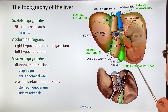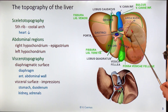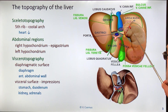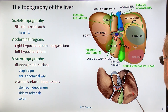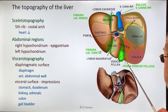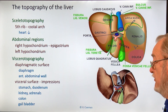Another large organ making an impression behind the liver is the kidney, producing a large renal impression. Sometimes the impression for the suprarenal gland — the impressio suprarenalis — is also visible. The liver is also in contact with the colon, producing the colic impression. Finally, the gallbladder makes a groove — the fossa vesicae felleae.